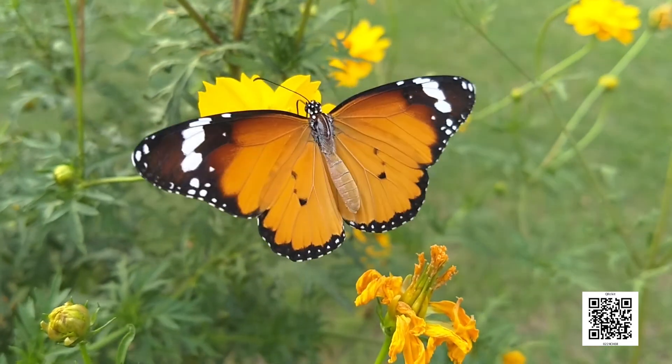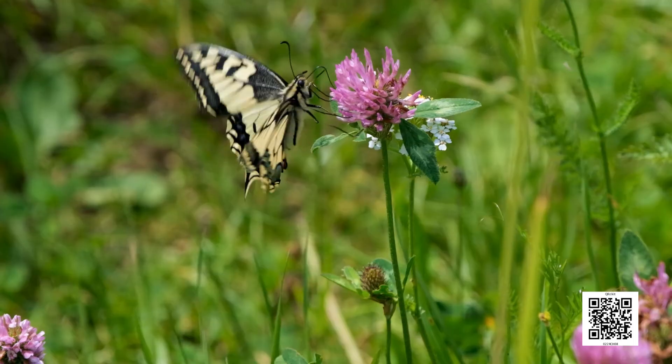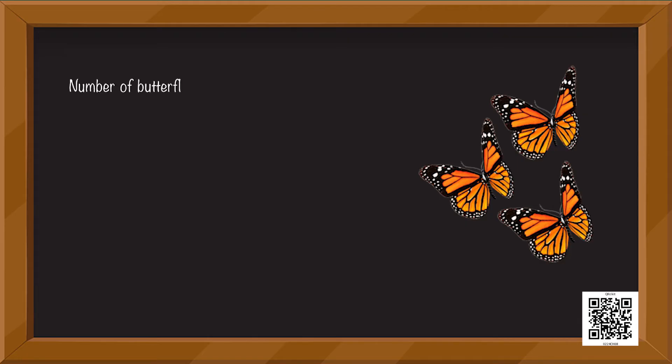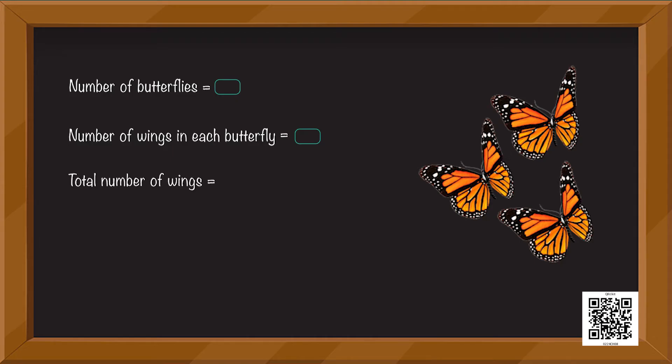Shall we move on to the next one? Have you ever seen butterflies around you? I am sure you have. Aren't they very colourful and pretty? Have you ever counted their wings? How many wings are there with one butterfly? So you have to tell me, in the image that you can see on your screens, the number of butterflies is equal to what? Number of wings in each butterfly is equal to what? Quickly count the wings. Total number of wings is equal to dash. Or we can say three twos are dash. So dash multiplied by dash is equal to what? Excellent. You did it wonderfully.